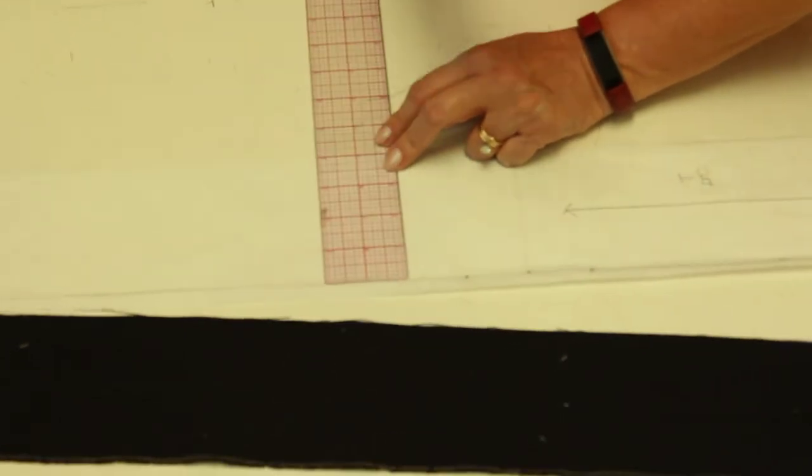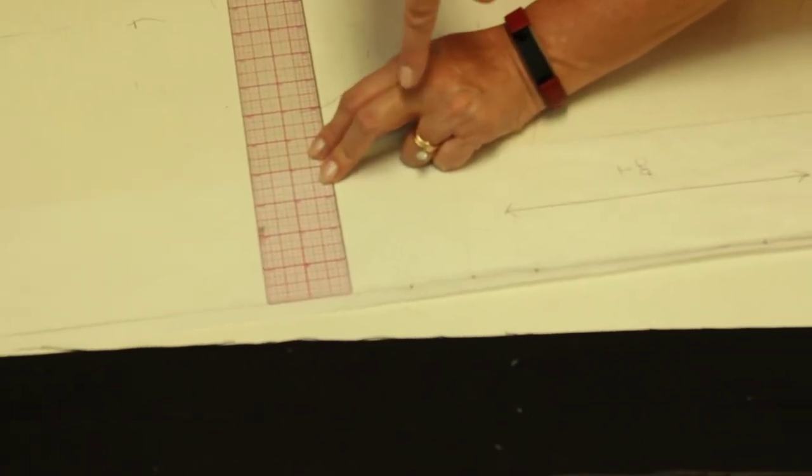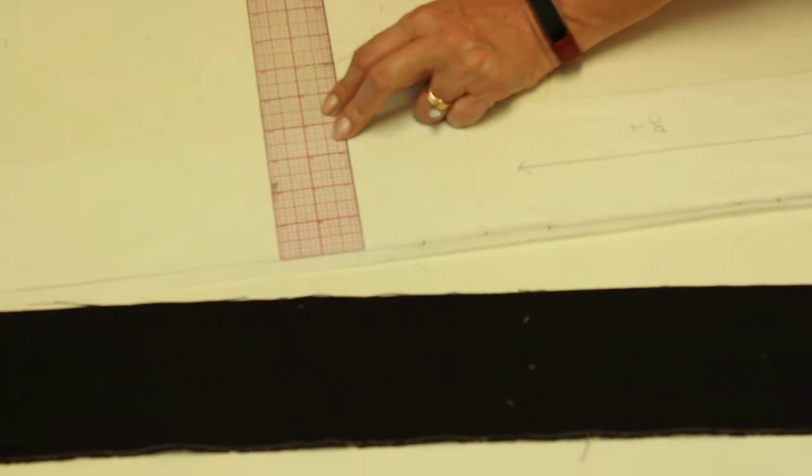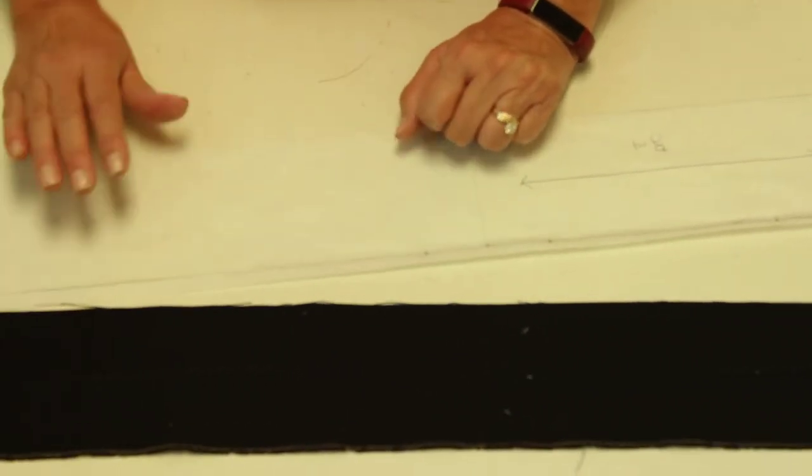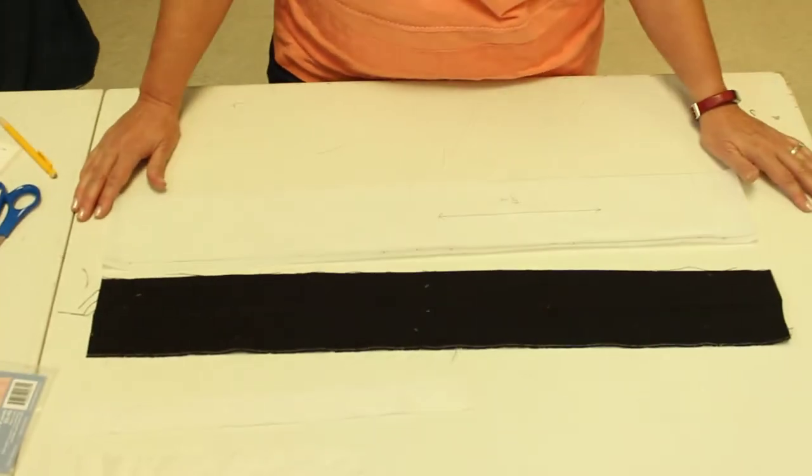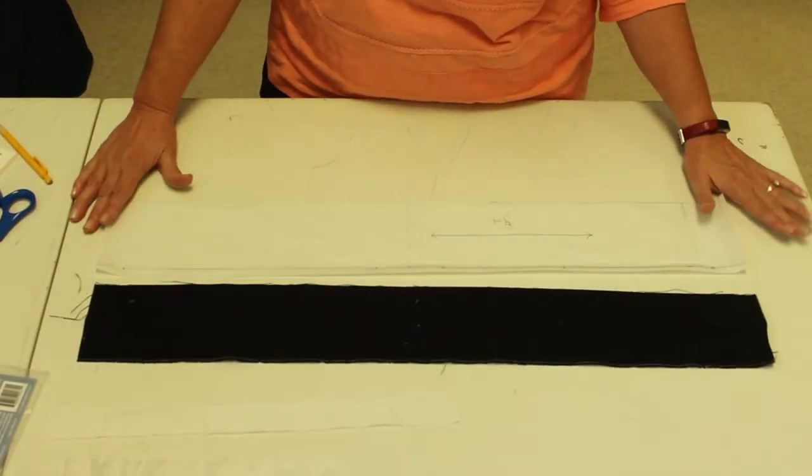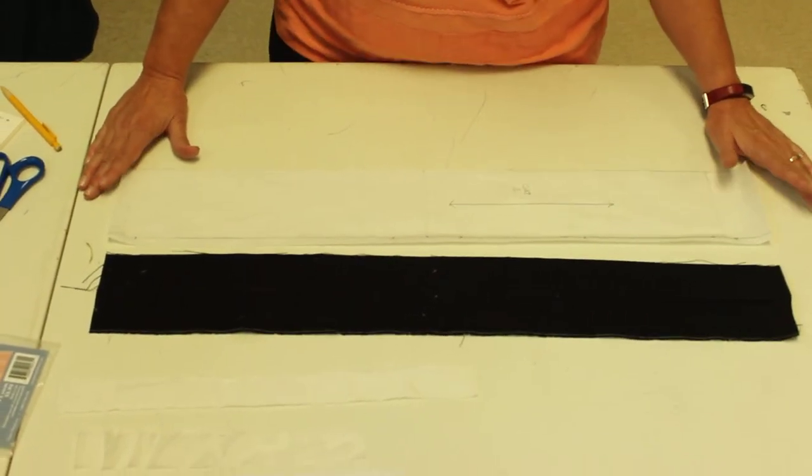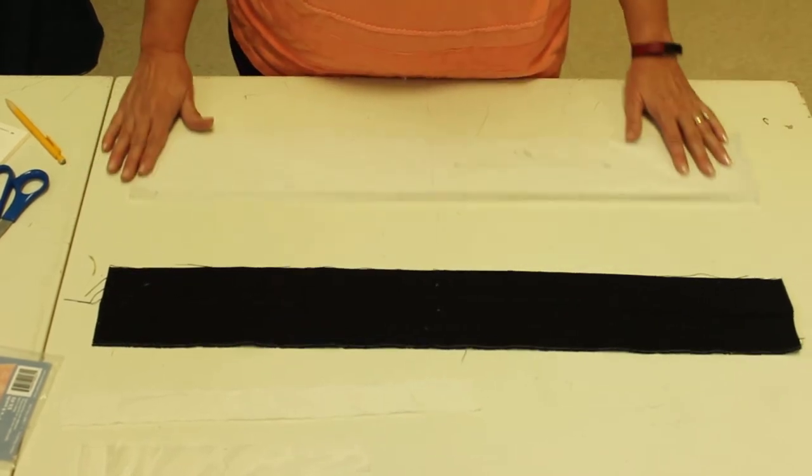And when we do the seam inside the waistband and finish it off, if we have a little extra, we just trim it. If we don't have enough, three-eighths is actually what we want to end up with, usually, and so we trim it. So that just makes sure I'm not going to run short. All right, so that is the size of your waistband.